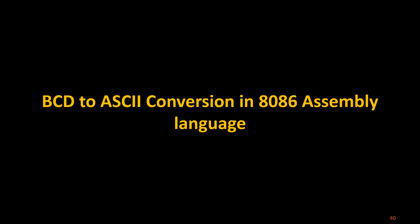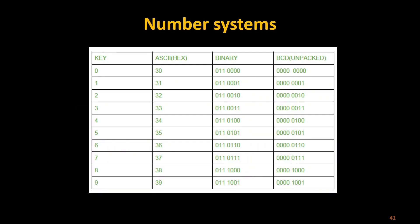Hello everyone. In this video we are going to see the number system conversion from BCD to ASCII using 8086 assembly language. We will be discussing both software and hardware programming — how we can do that. First we can see how BCD and ASCII are going to look. The key values are going to start from 0 to 9.